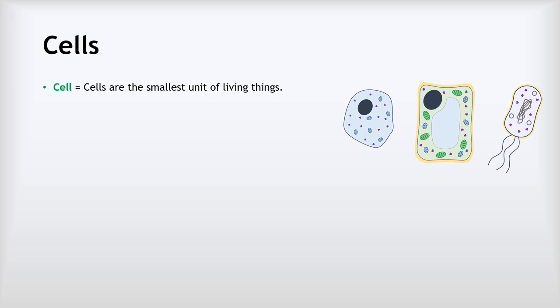Okay, so what are cells? Cells are the smallest unit of living things - that is to say, they're the smallest part of a living thing that can still be considered to be alive. And we often draw them in diagrams like this one, this one, and this one, which we'll see in a lot more detail later on in this video.